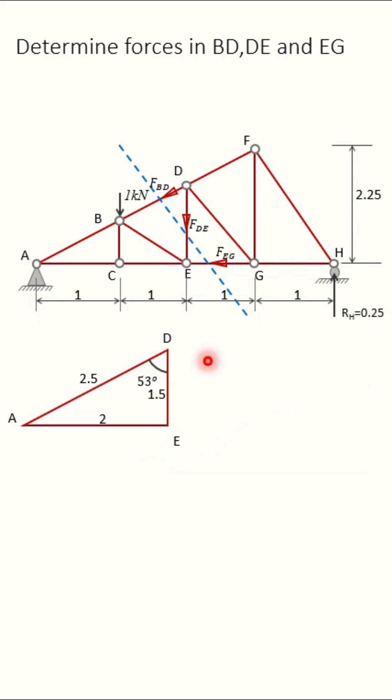Now we will apply sigma Ma equals zero. So moment of FBD, FEG will be zero. Moment of FDE into two clockwise. So FDE into two clockwise positive. And RH is 0.25 anticlockwise into four equals zero. From this, you will get FDE equals 0.5 kilonewtons. Positive value indicates tension member.